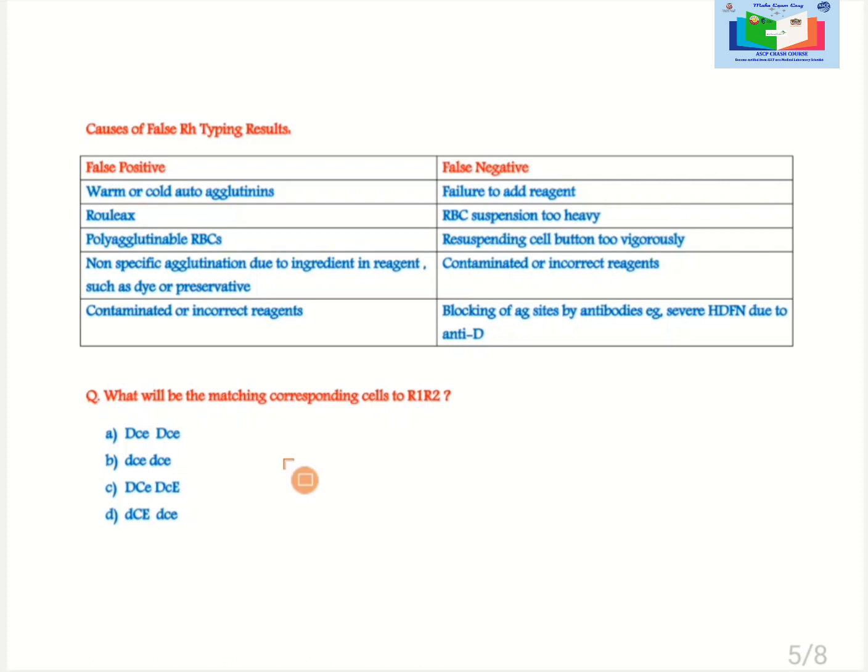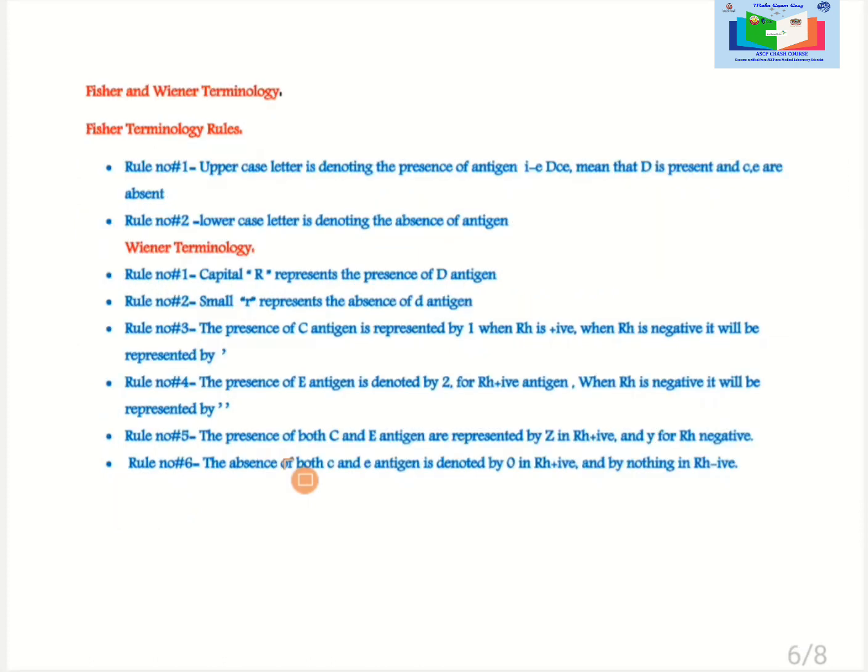Let's break down the Fischer and Wiener terminologies. Here are some rules for both of these terminologies. Like for the Fischer terminology rules. Rule number 1: Upper case letter is denoting the presence of antigen. For example, capital D, C and E mean that D is present and small c and small e are absent. Rule number 2 for the Fischer terminology: Lower case letter is denoting the absence of antigen.